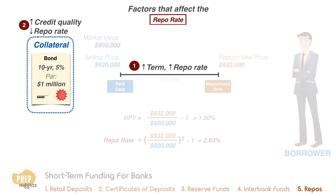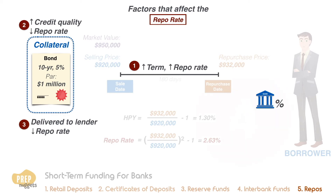Borrowers have the choice of whether to deliver the collateral to the lender or just pledge the collateral without delivery. If the collateral is delivered, the repo rate will be lower. And because there are alternative sources like taking a bank loan, the interest rate charged by these alternative sources is also a factor. If alternative interest rates are high, the repo rate is likely to be high as well.